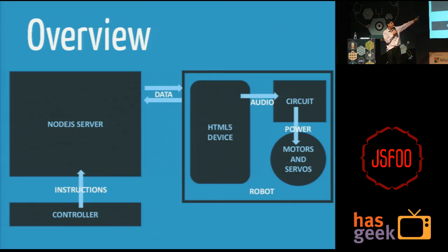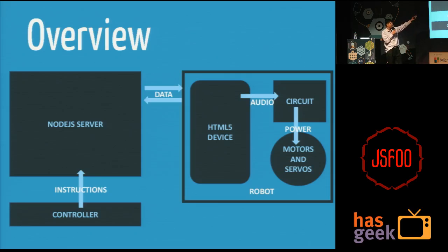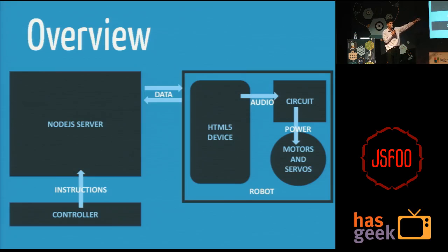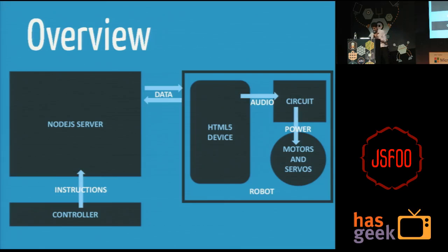This HTML5 device — assuming it has internet connectivity via Wi-Fi, 2G, 3G, or 4G — was connected with a Node.js server. You can make it real-time if you need to, if your motors are sensitive enough; you can use something like socket.io. And then I can have a lot of controllers connected to the Node.js server, controlling what the robot does physically through a server. This is a brief overview of what I'm going to cover.